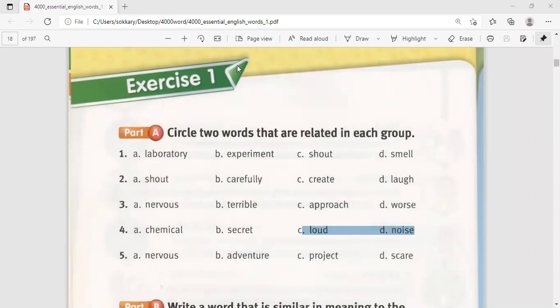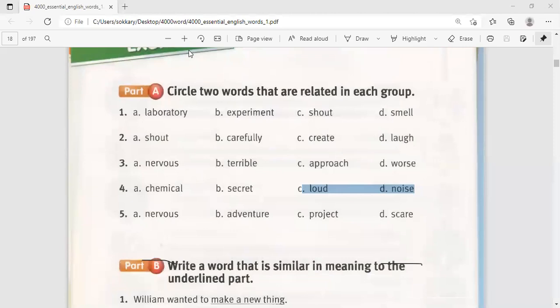Yusuf Amara, go to group number five. Read the words and think about it. Nervous, adventure, project, and scared. Nervous and scared. Thank you very much. Nervous means angry. Scared means afraid. Both of them are bad feelings. The connection between them is that they describe something bad we feel about it.